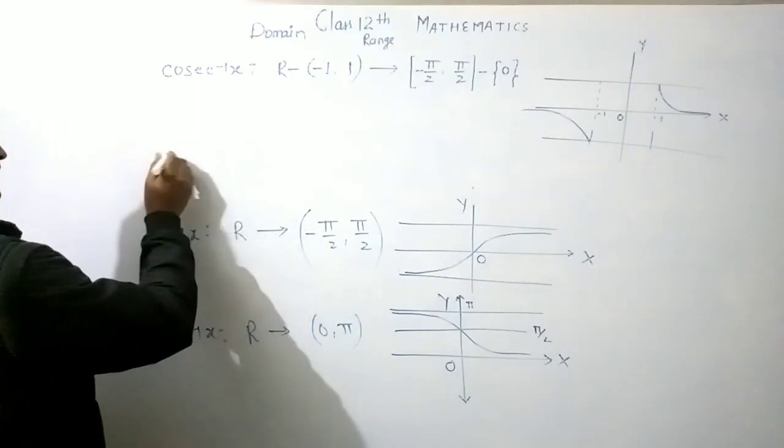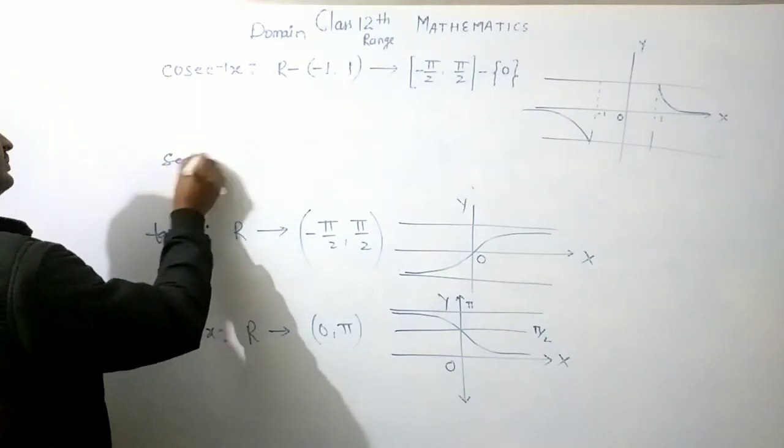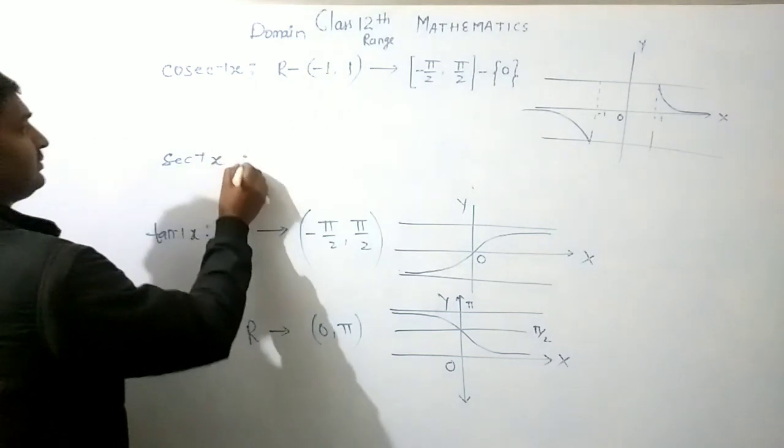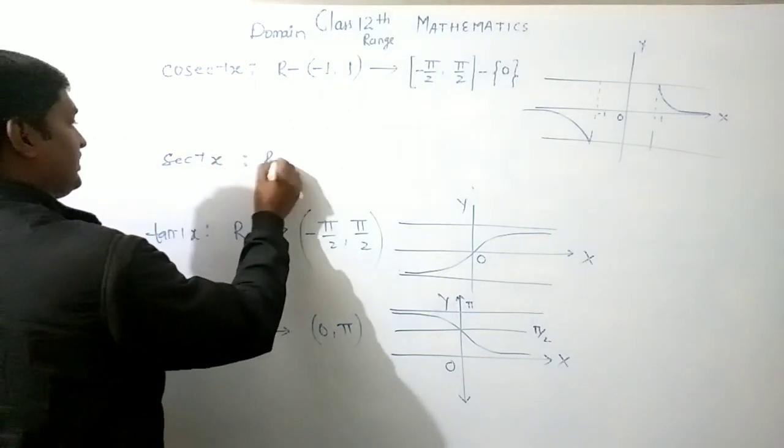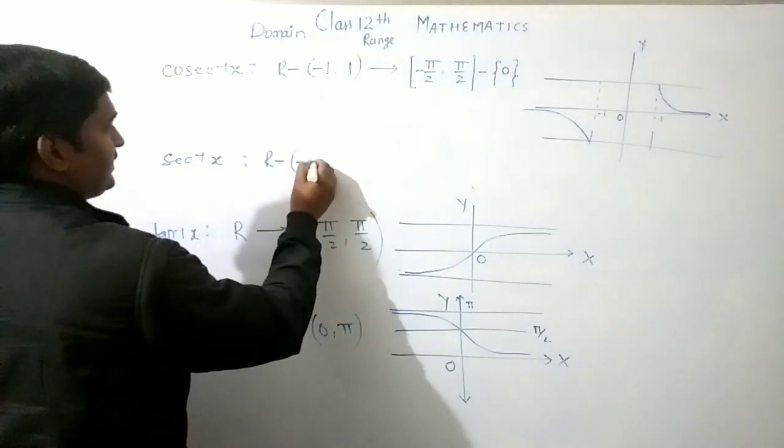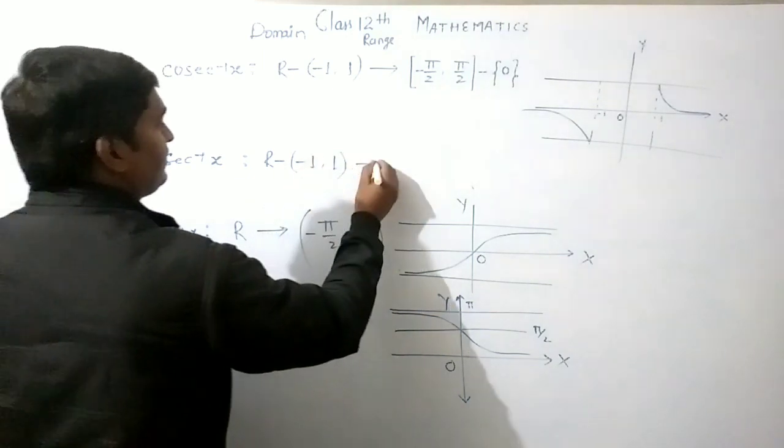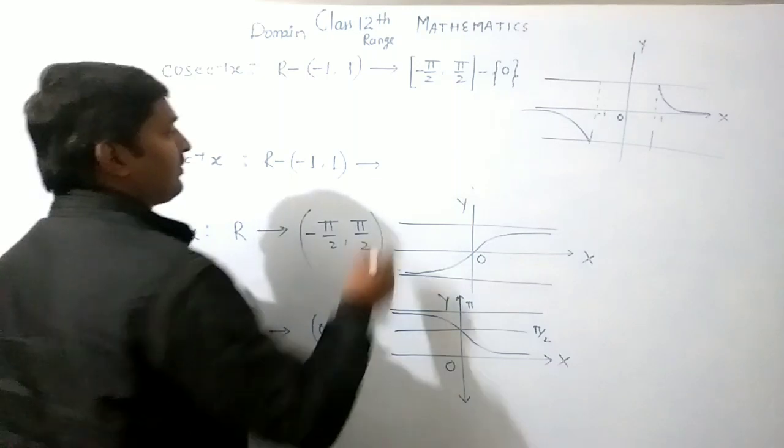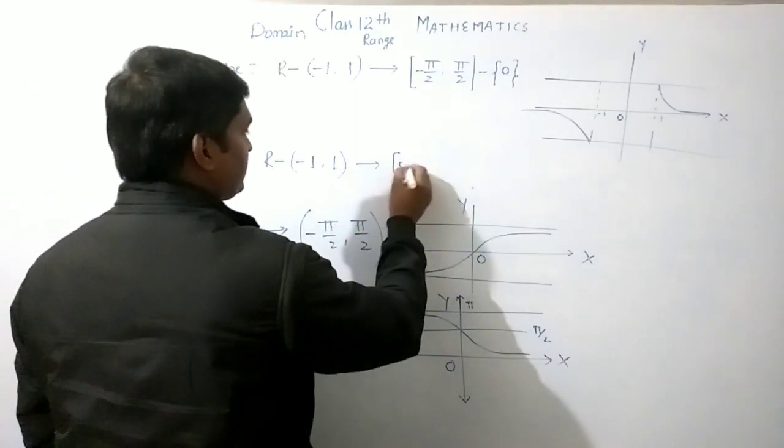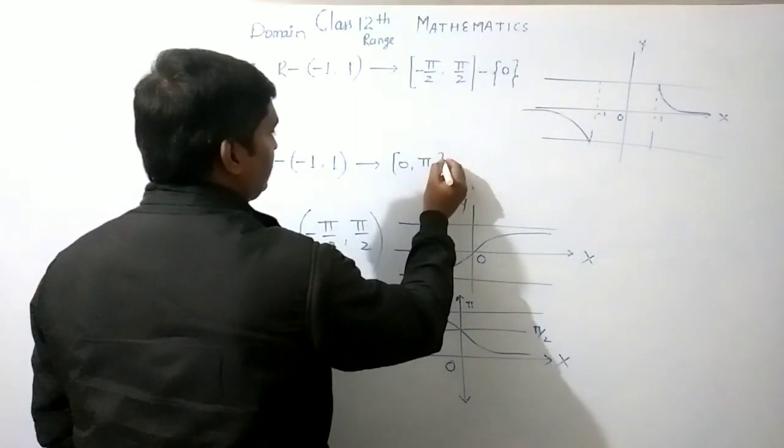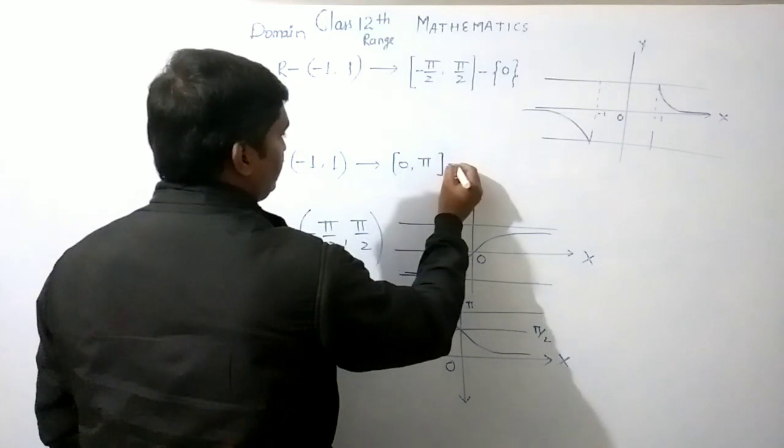Next function: sec inverse x. Domain: R minus (-1, 1). Range: closed interval [0, π], except π/2.